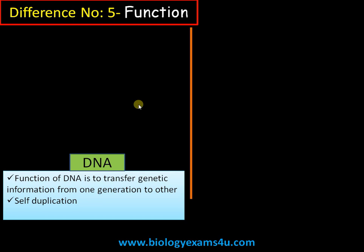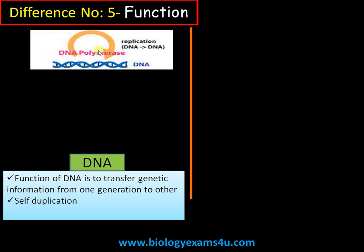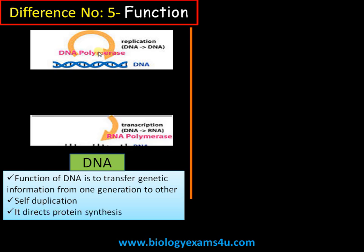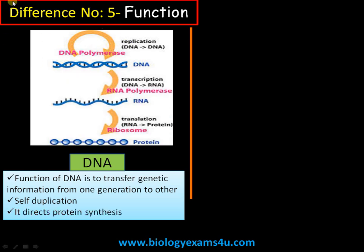Difference number five is regarding function. DNA is the genetic material in all organisms; it is responsible for storage of genetic information and transfer of that information from one generation to another. It is capable of self-duplication, has a self-repair mechanism, and copies are distributed to daughter cells. It also directs protein synthesis — all proteins required by cells are coded as DNA nucleotide information, in a process called the central dogma of biology.